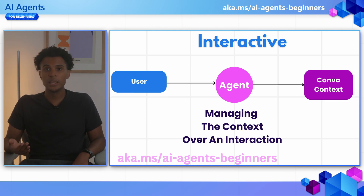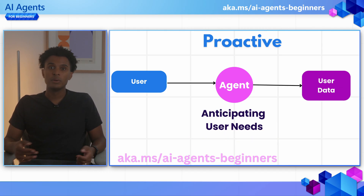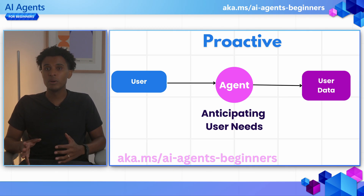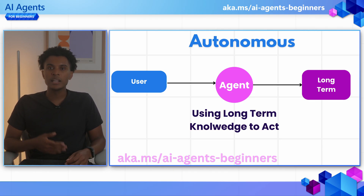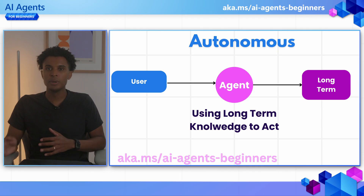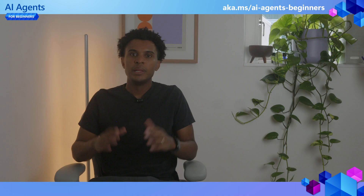Being interactive means how to maintain context over an ongoing conversation. Being proactive is how to respond and anticipate users' needs based on historical data that we give the agents access to. And lastly, being autonomous — so that agents can act more independently based on long-term knowledge without having to ask users constantly for input and feedback if it's not actually needed.